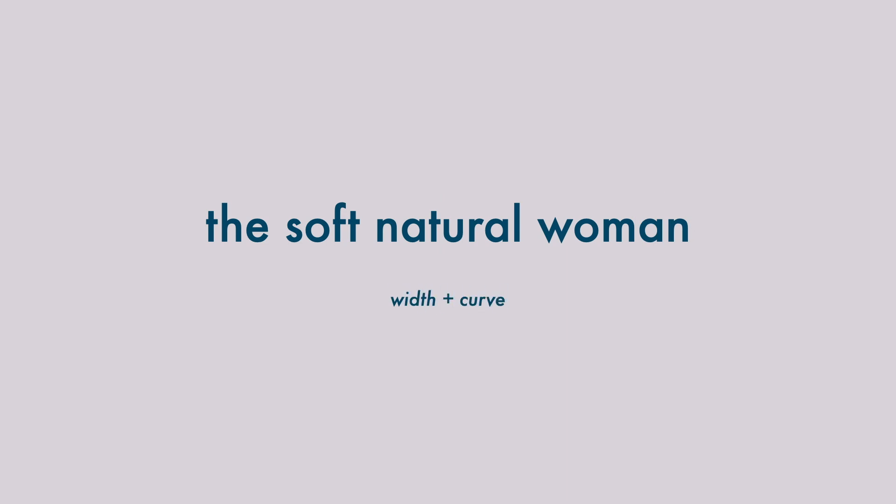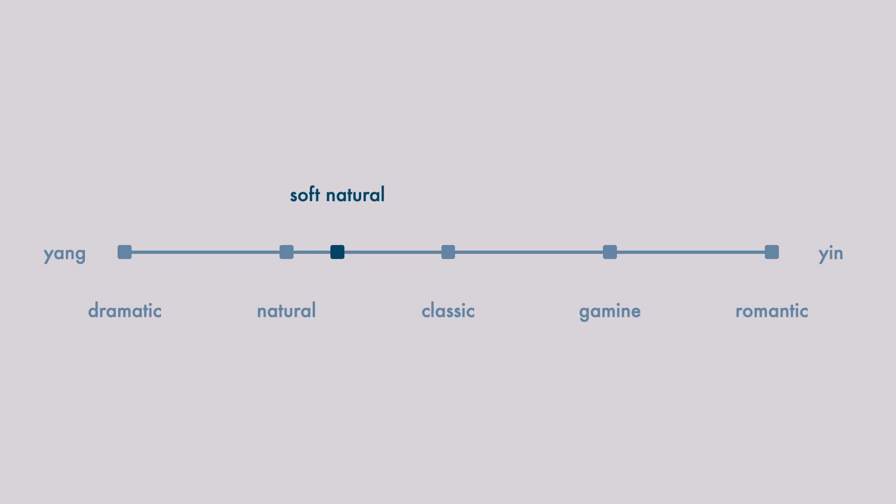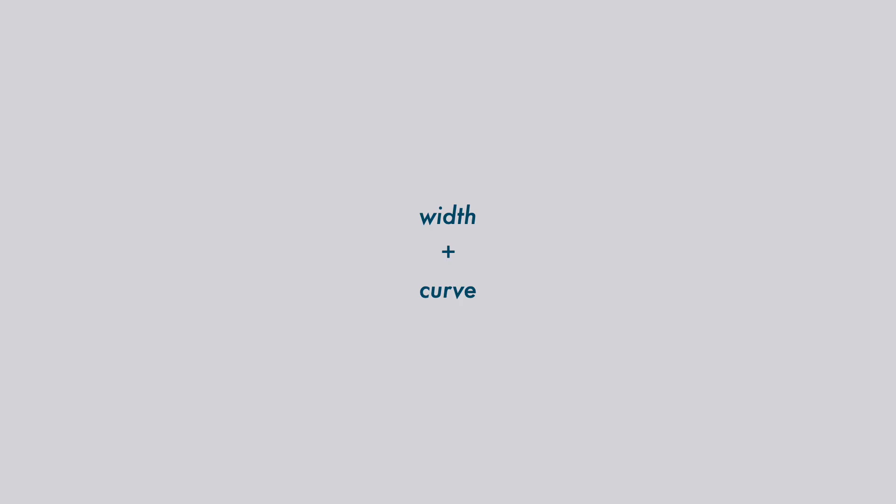Now let's get into an introduction of the soft natural woman. All of the Kibbe body types are primarily described by their unique mix of yin or feminine traits and yang or masculine traits. The soft natural woman is a beautiful combination of soft yang and a pronounced yin or romantic undercurrent. Her dominant descriptors are width and curve, and this width primarily shows up in the shoulder and bust area. Her yang body structure is frame dominant and bluntly angular, with yin traits appearing in her soft flesh.